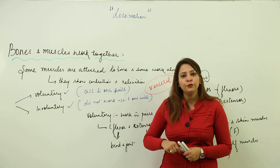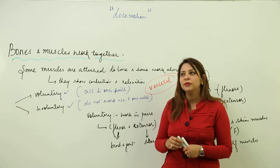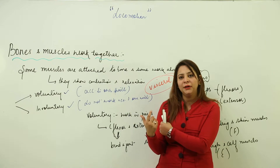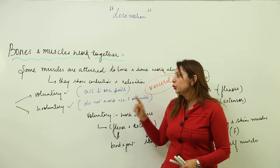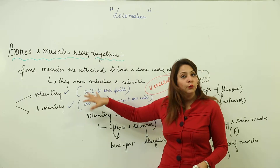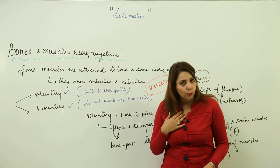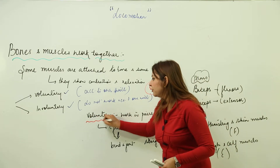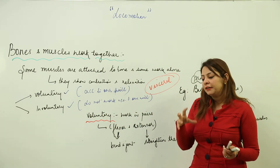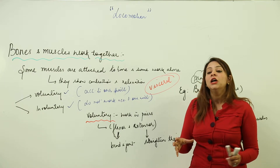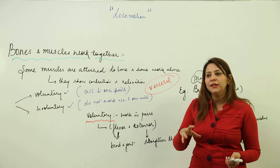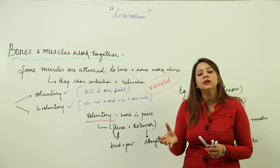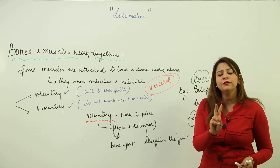We also have many muscles in the body that we can move when we want — like moving a hand. These work according to our will, so they are in voluntary organs. Voluntary muscles work in pairs: when one contracts, the other relaxes, and when one relaxes, the other contracts.